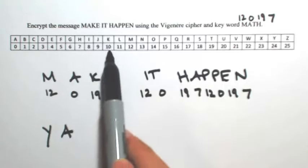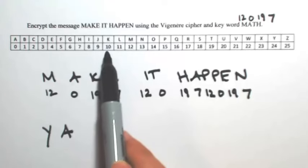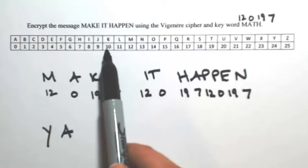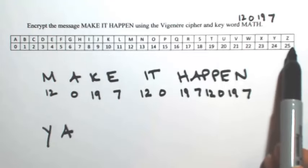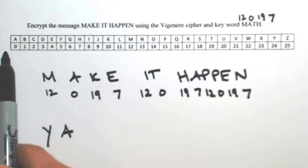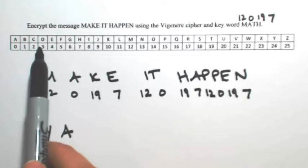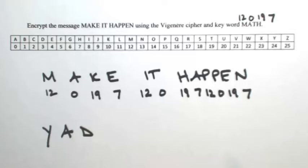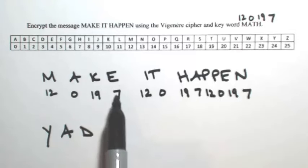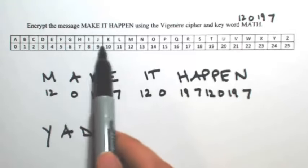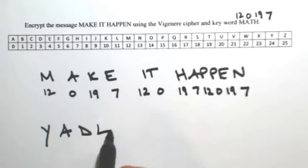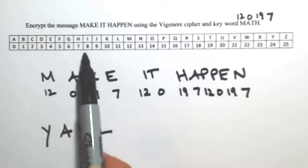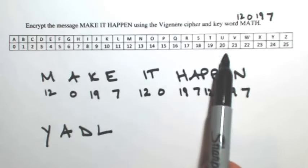The K, which is 10, gets shifted by 19, so that becomes 29. Since we end at 25, counting from 10 to 25 is 15, then continuing: 16, 17, 18, 19 — so that becomes a D. The E is shifted by 7; E is 4, add 7, you get 11, so that's an L. The I gets shifted by 12; I is 8, add 12, you get 20, so that's a U.